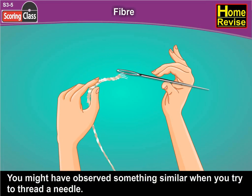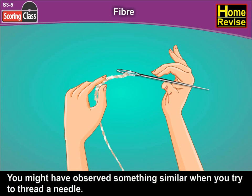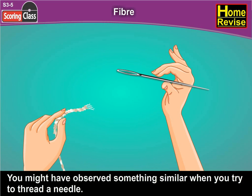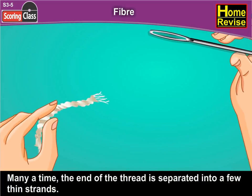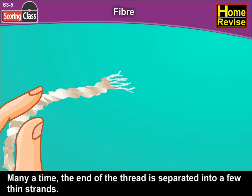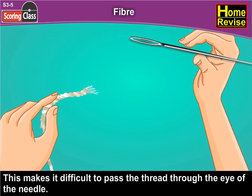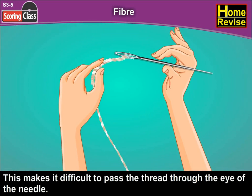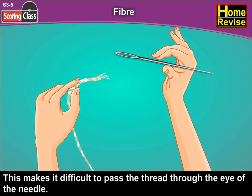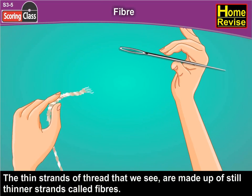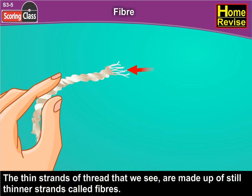You might have observed something similar when you try to thread a needle. Many a time the end of the thread is separated into a few thin strands, which makes it difficult to pass the thread through the eye of the needle. The thin strands of thread that we see are made up of still thinner strands called fibres.